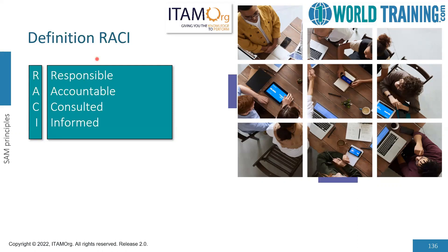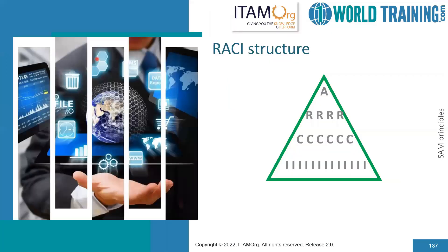Accountable is usually one person only who has the ownership of the process and the result from it. Consulted means those who are consulted and whose opinions are sought — they might provide input based on their knowledge and expertise. Informed means people who are kept updated on the progress of the service and receive information about the process execution and quality. There is only one person always accountable; accountability cannot be shared or split, but we can have more people in R, C, and I.